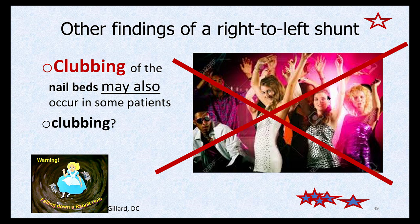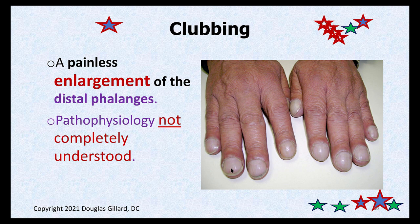Clubbing of the nails is also a sign of a right-to-left shunt. We'll pick this up on the next lecture where you can see how nails look like clubs - we'll get into that detail next time.